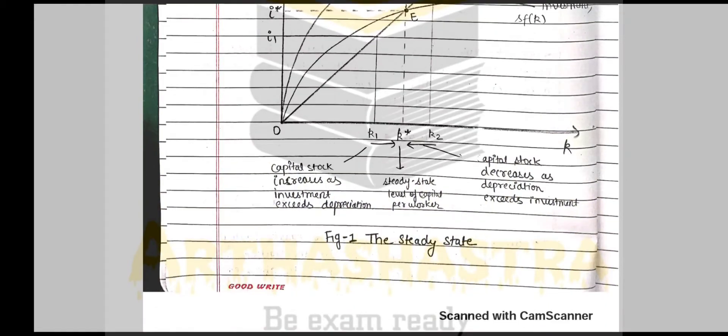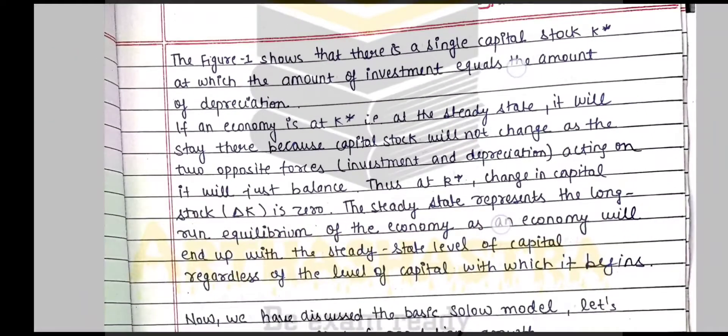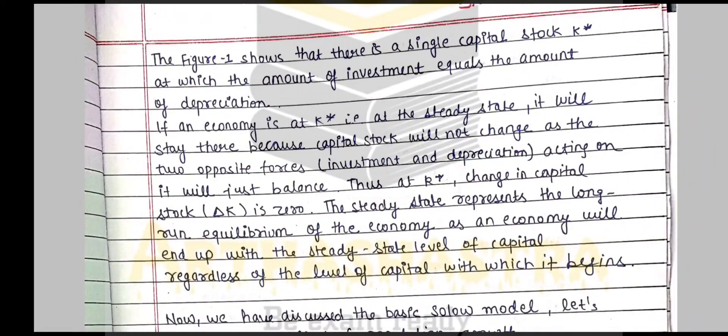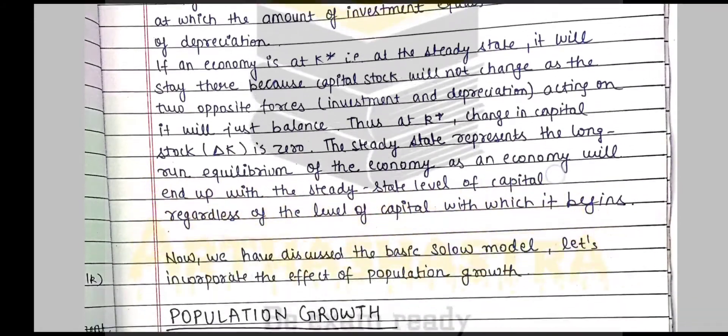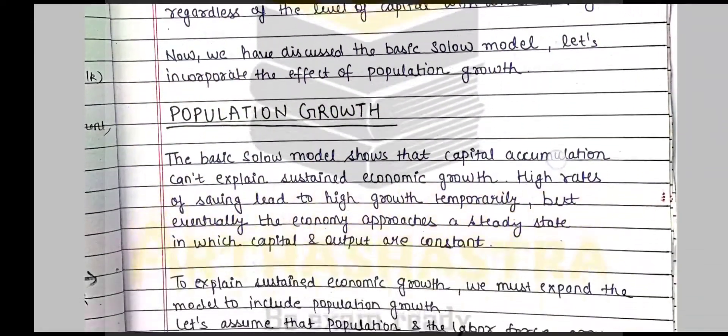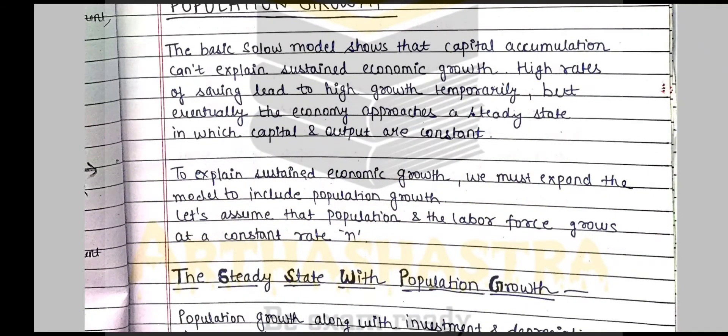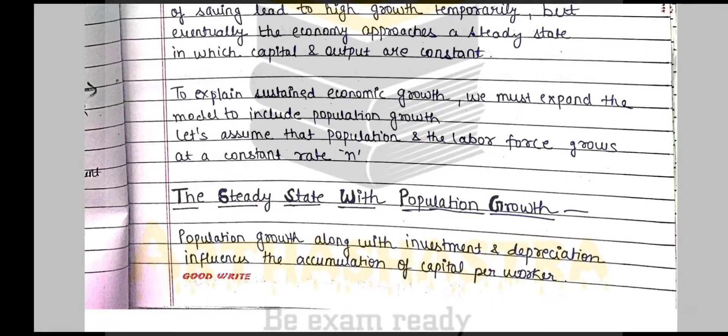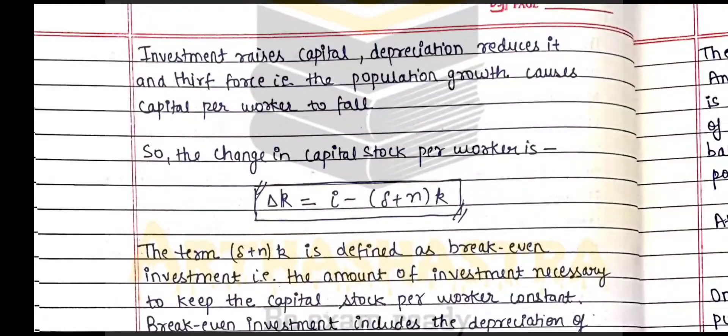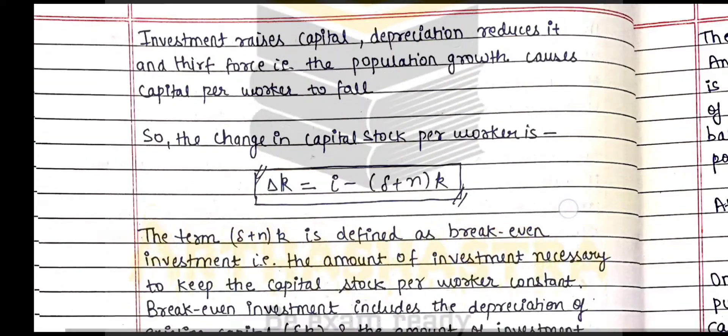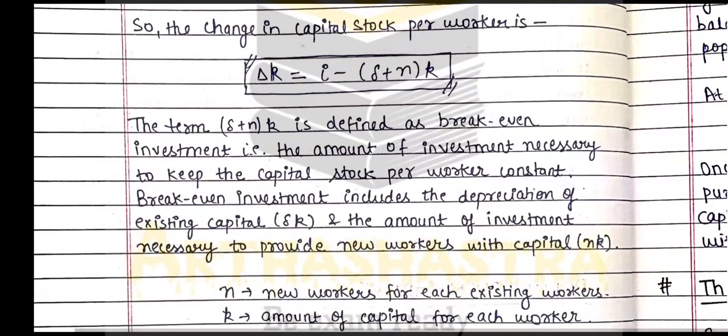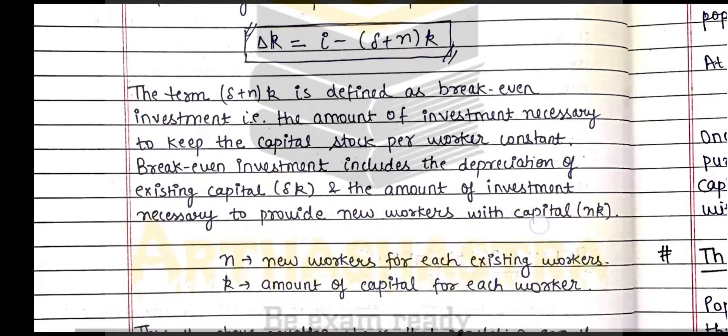Moving forward, we move to the explanation of what the figure is trying to show. Next we incorporate the population growth as the question demands. Now we will see how an economy can achieve steady state growth when population is growing, so we have derived the new equation incorporating the effect of population.